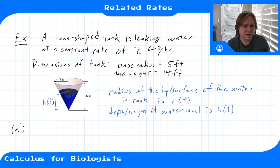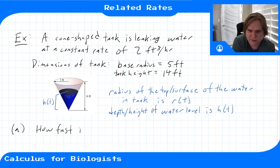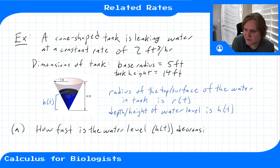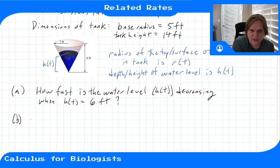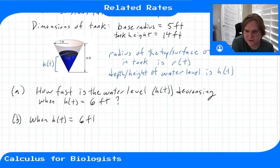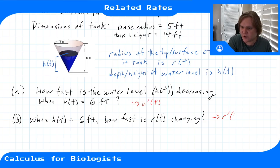We have two questions to answer. First, how fast is the water level decreasing — that is, what is h'(t) — when the depth equals 6 feet? Second, at that same moment when h(t) equals 6 feet, how fast is the radius changing, i.e., what is r'(t)? So we're looking for two different rates: the rate of change of h and the rate of change of r.